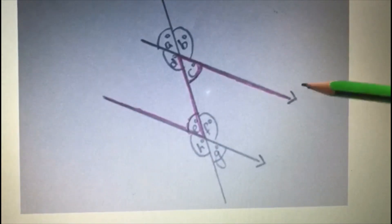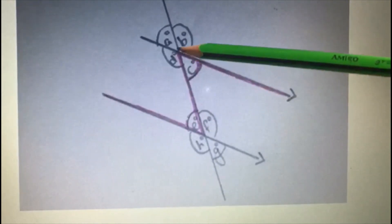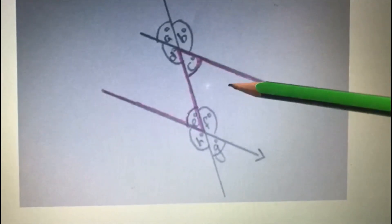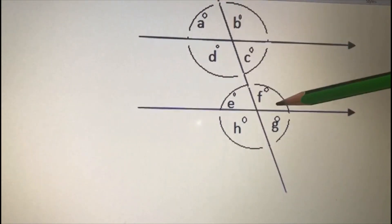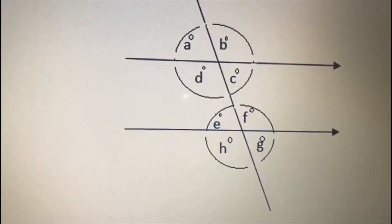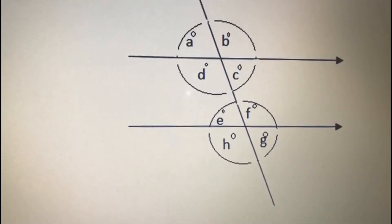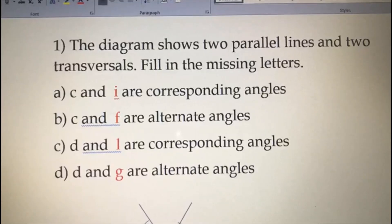Then angle C and angle E are also equal. So from here, you are getting two pairs of alternate angles: D and F, and C and E. Don't make a mistake — for corresponding angles think F, and for alternate angles think Z or C.